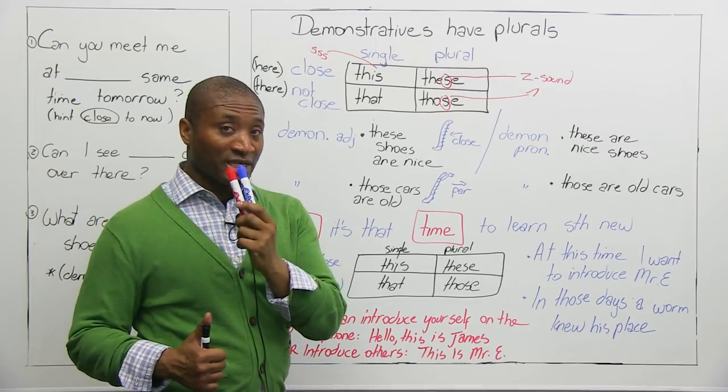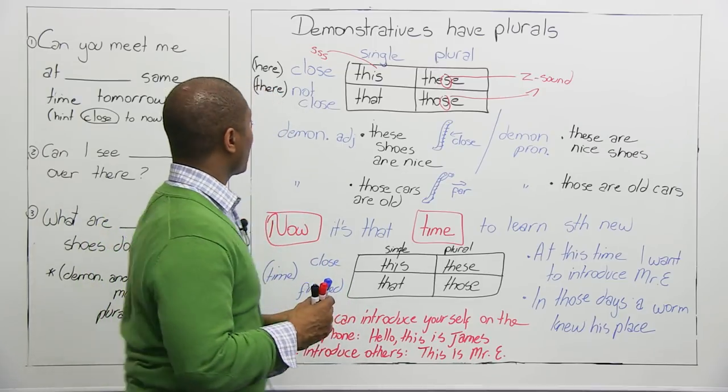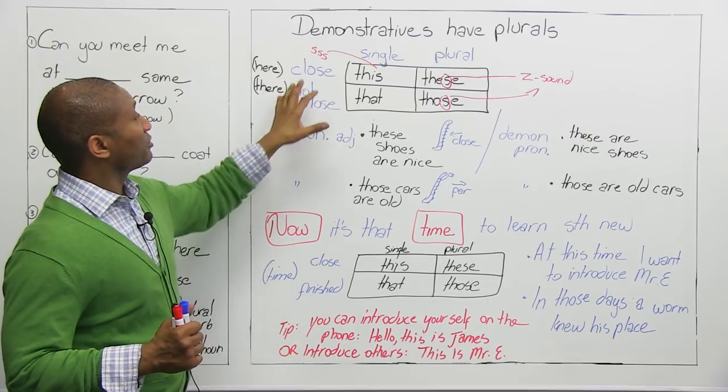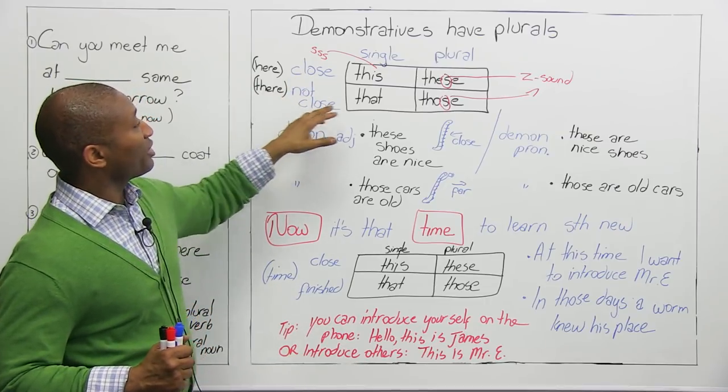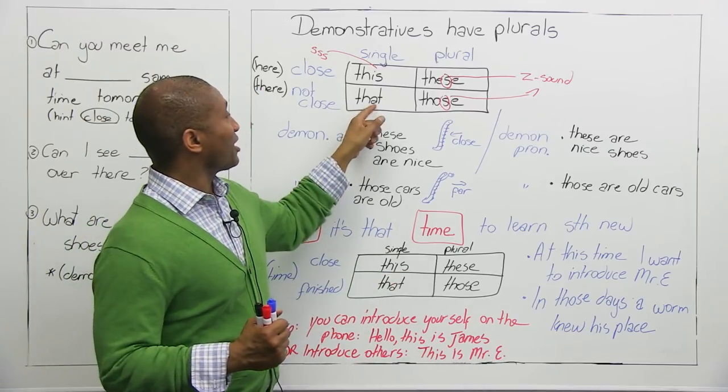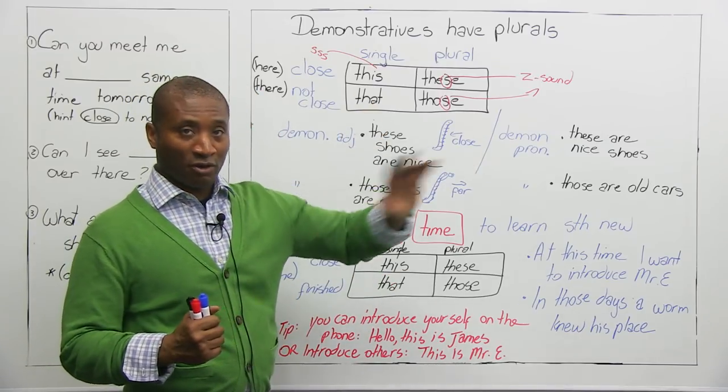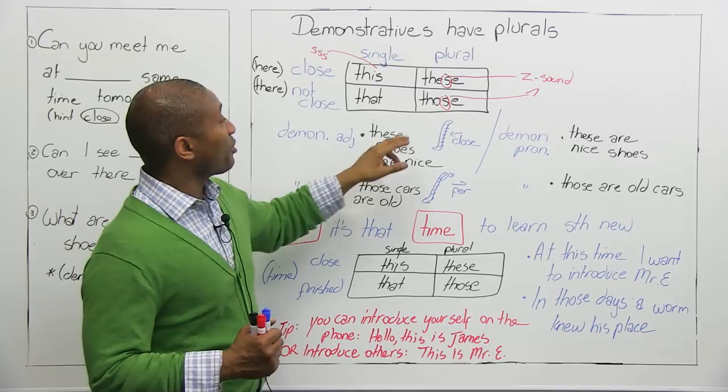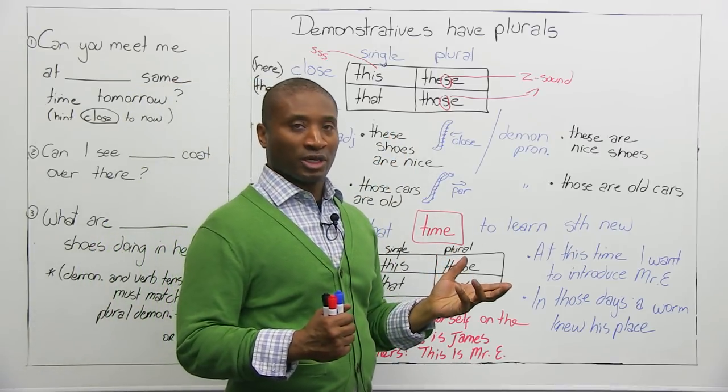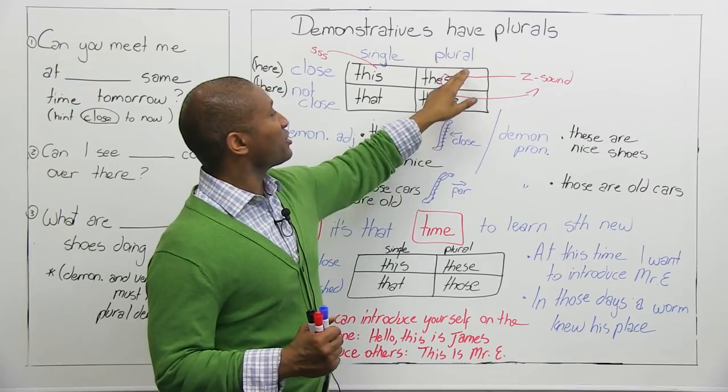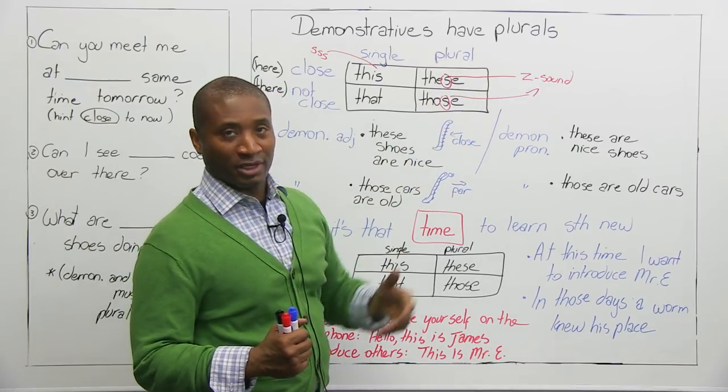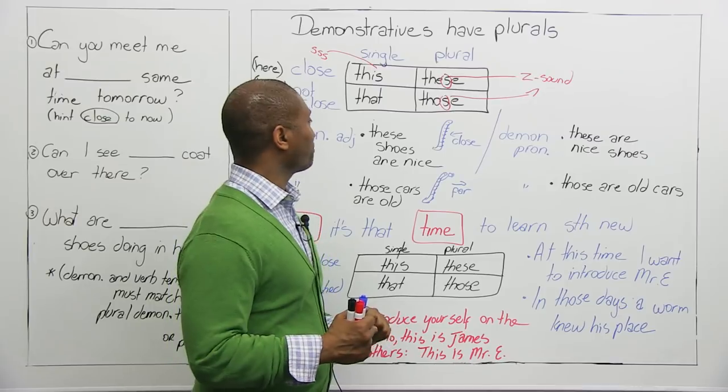So let's look at the chart here, what we have. So when something is close to us, we have this, which is the single, right, and it means here, and we have these with a zed sound, which also means here, but plural. This pen or these pens. Okay? Now, when we talk about the demonstratives that are not close, we say, not close, there, we have that, which you know, and that, I told you, a means away from, to help you remember, but we also have those, right? Long o sound and the same zed sound. So the zed sound is in both plurals, so it makes it easy for you, right? These and those, right?